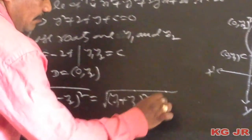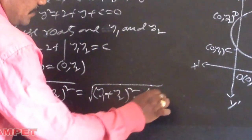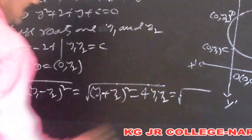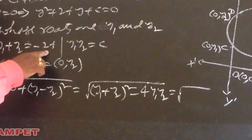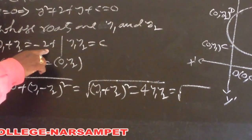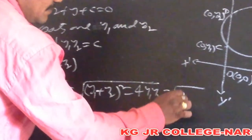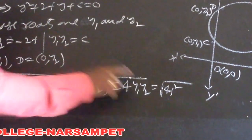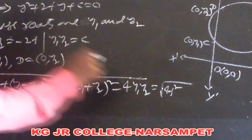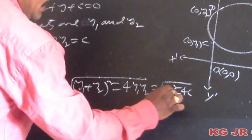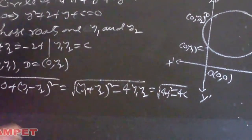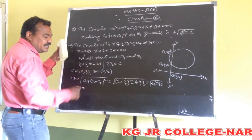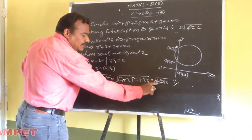So CD equals under root of (minus 2f)² minus 4c, which is under root of 4f square minus 4c. Under root of 4 is 2, so CD equals 2 into root of f square minus c.